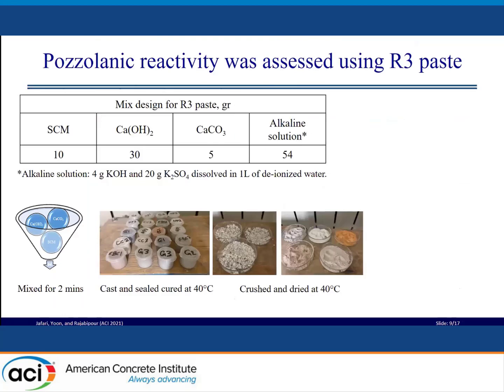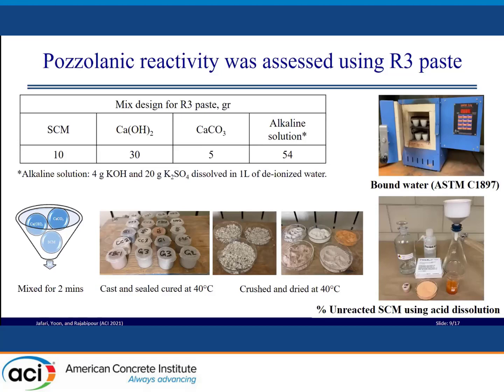In addition, the pozzolanic reactivity was measured using the R3 test. You can see the mix design of the paste in the table. After mixing, these paste samples were cast in a sealed container and cured at 40°C until the test day. At the test day, the samples were demolded, dried, and milled to measure the chemically bound water and percent unreacted pozzolan using acid dissolution at various ages. In the bound water test, the powders were placed in a kiln to measure the mass change due to heating up to 350°C. The percent unreacted pozzolan was measured using an acid dissolution test, in which the powder was added to one molar hydrochloric acid, mixed for 20 minutes, and then vacuum filtered. In this method, all the hardened phases dissolved in the acid while the unreacted pozzolans remained intact.